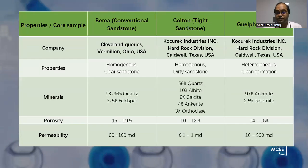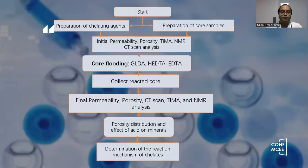Different core samples are used in this research. It consists of various sandstones, Colton sandstone, and Gulf dolomite. Each has different properties of porosity, permeability, and mineralogy.